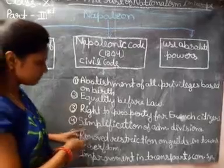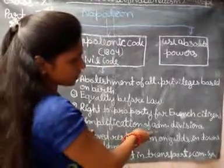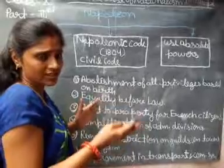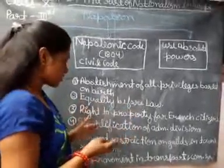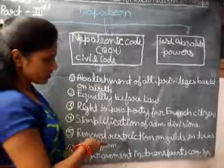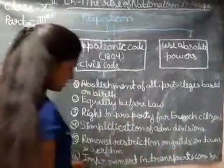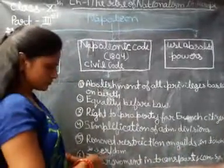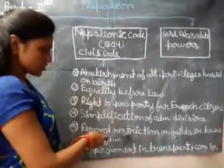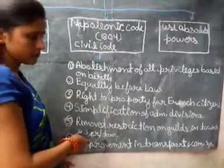The fourth one is the simplification of administrative divisions. He simplified the administrative divisions for the smooth functioning of the administration. The next one is the removal of restrictions on guilds in towns and serfdom. Serfdom means slavery, and he removed these restrictions.